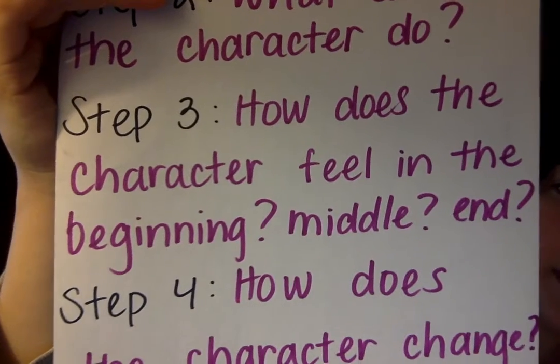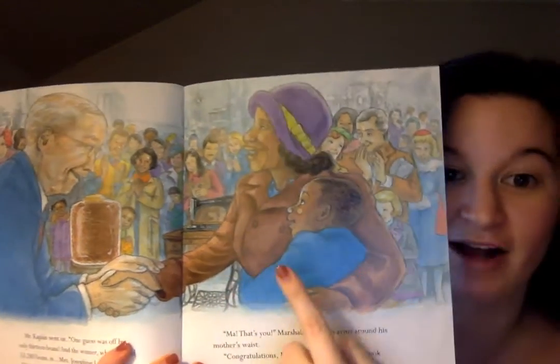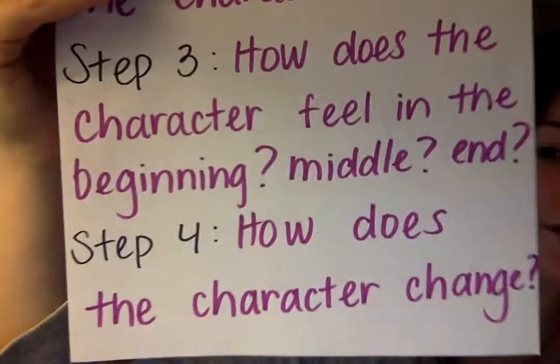Step three: how does the character feel in the beginning, middle, and end? In the beginning, Marshall is really annoyed that he has to eat beans every night for dinner — he says he really started hating beans because it's all his mother could afford. By the end, Marshall is really grateful for his mother's knowledge of beans, because that knowledge helped them win the contest. Step four: how does the character change? The character change and lesson learned are similar — Marshall changes because he learns to be grateful for what he has, including his mother making dinner and her knowledge of beans.